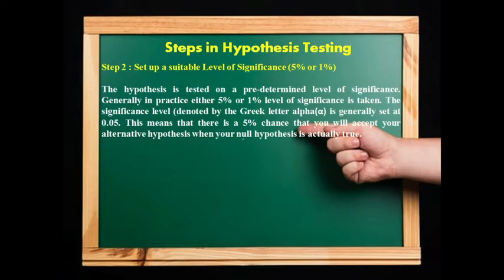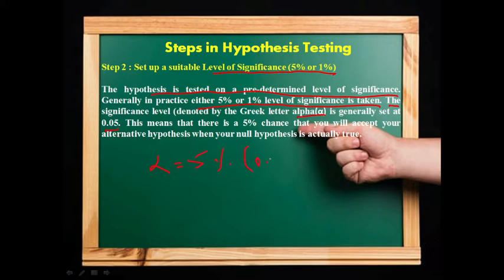Step 2: Set up a suitable level of significance. We need to set a level of significance, which is called the 5% or 1% level of significance. The hypothesis is tested on a pre-determined level of significance. Generally in practice, either 5% or 1% level of significance is taken. The significance level is denoted by the Greek letter alpha and is generally set at 0.05, meaning 5%.